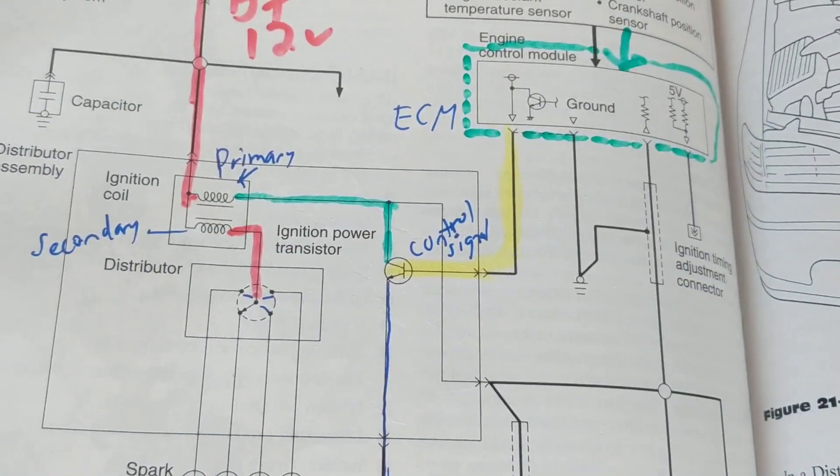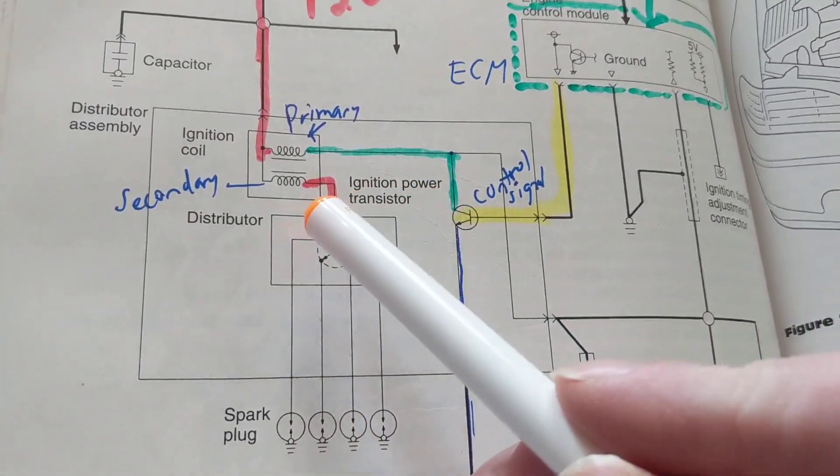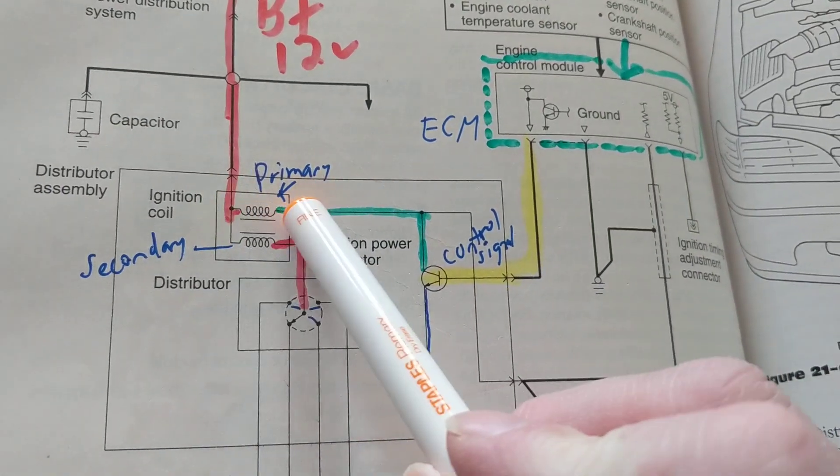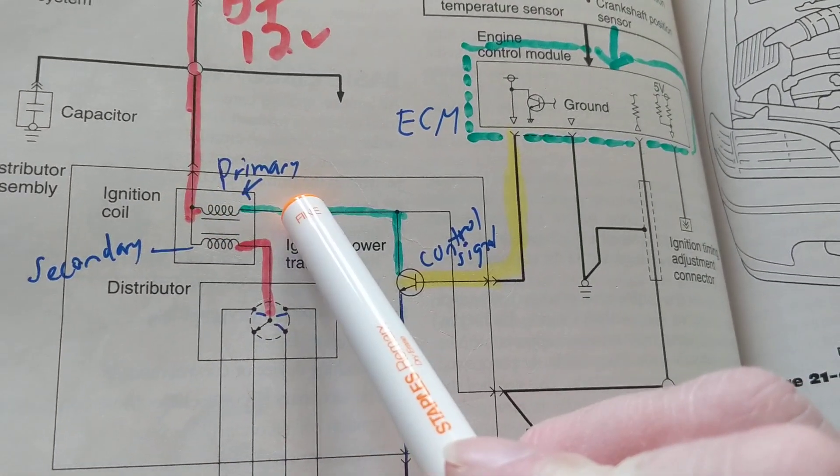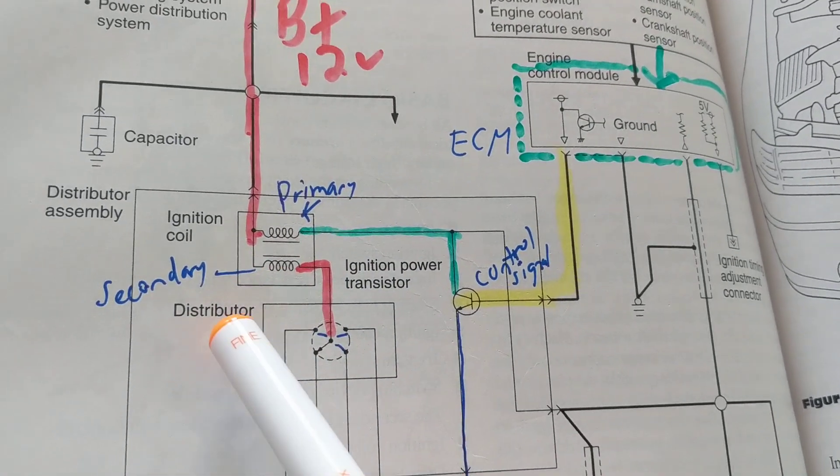With the ignition coil over here going to a distributor—this is called the primary. We spoke about this one time. This is where the 12 volts comes in. The secondary...